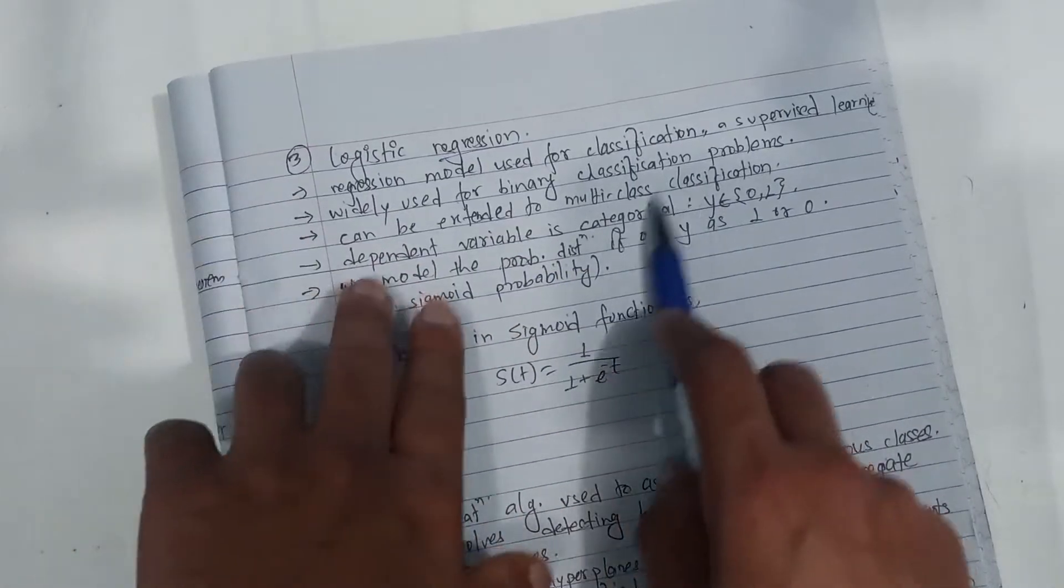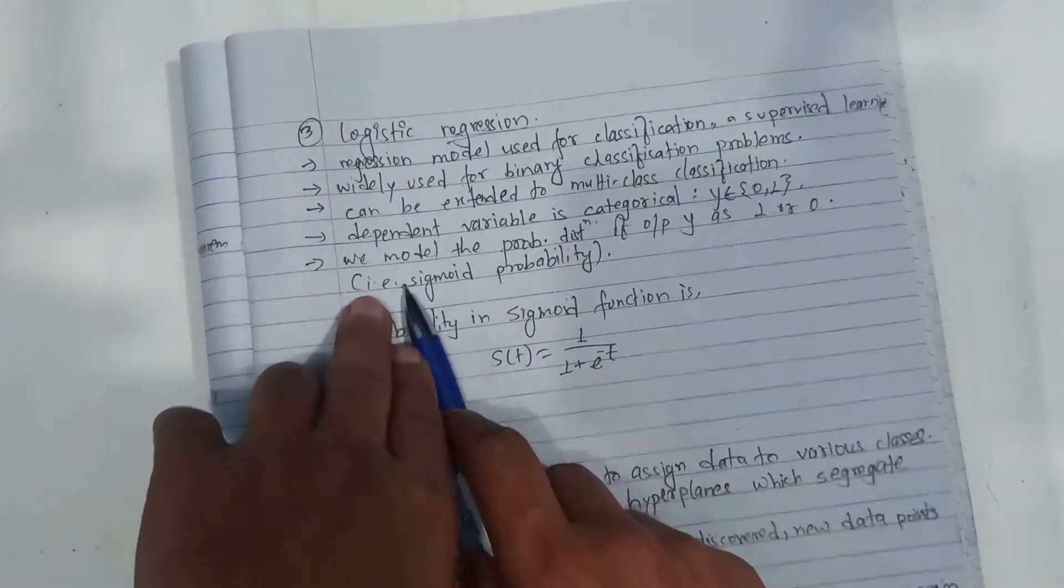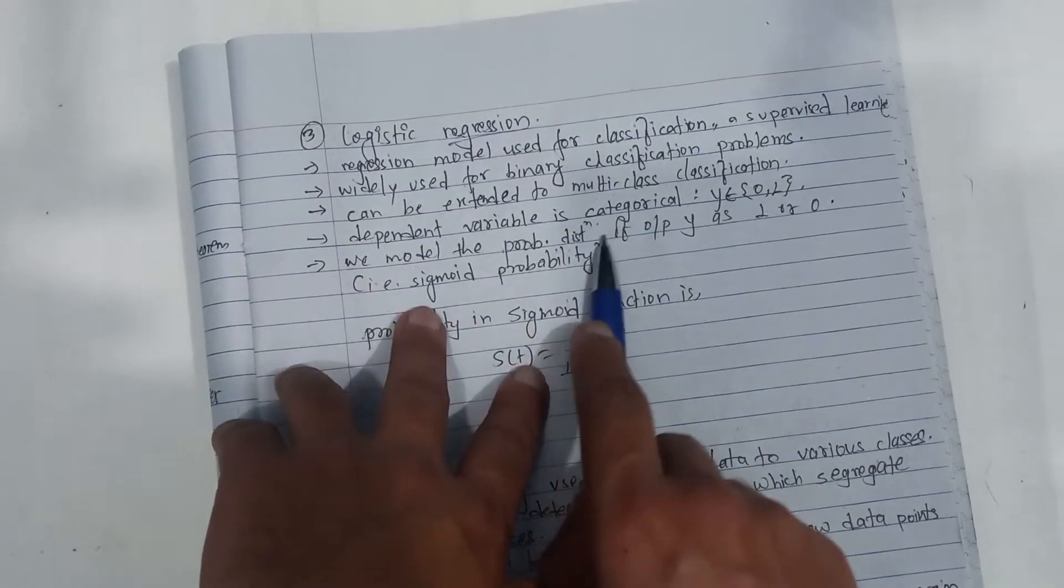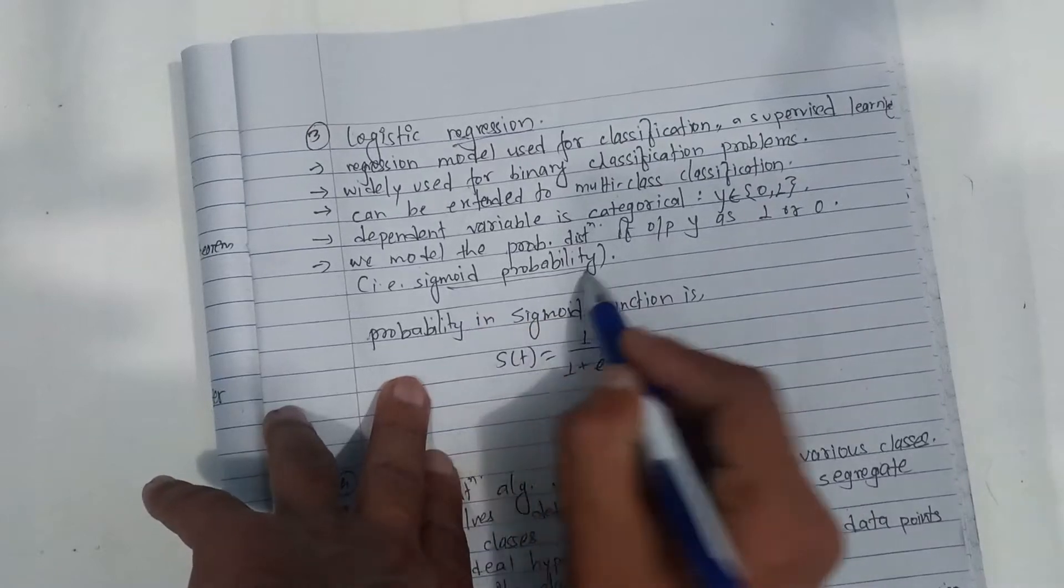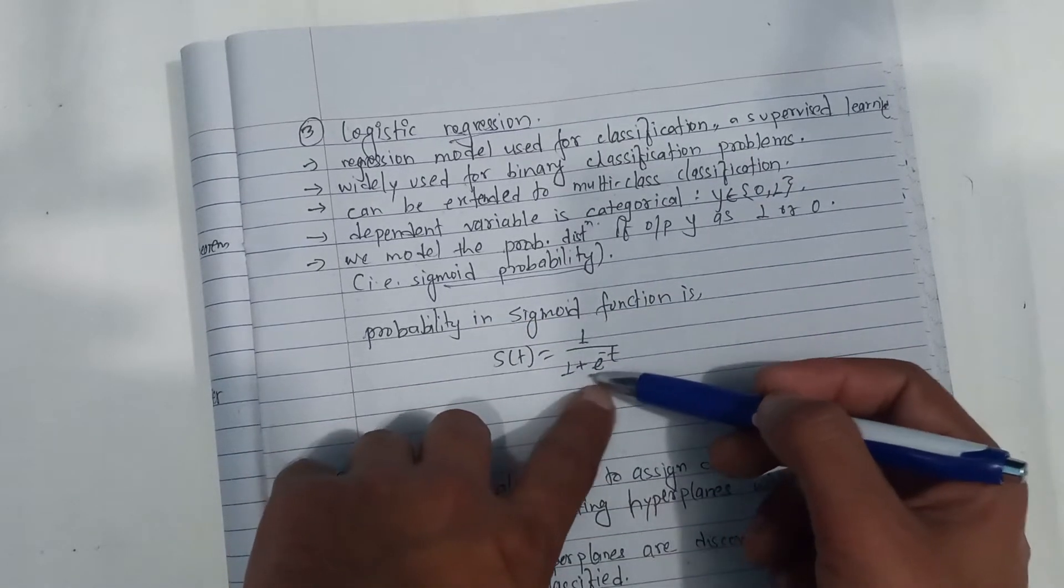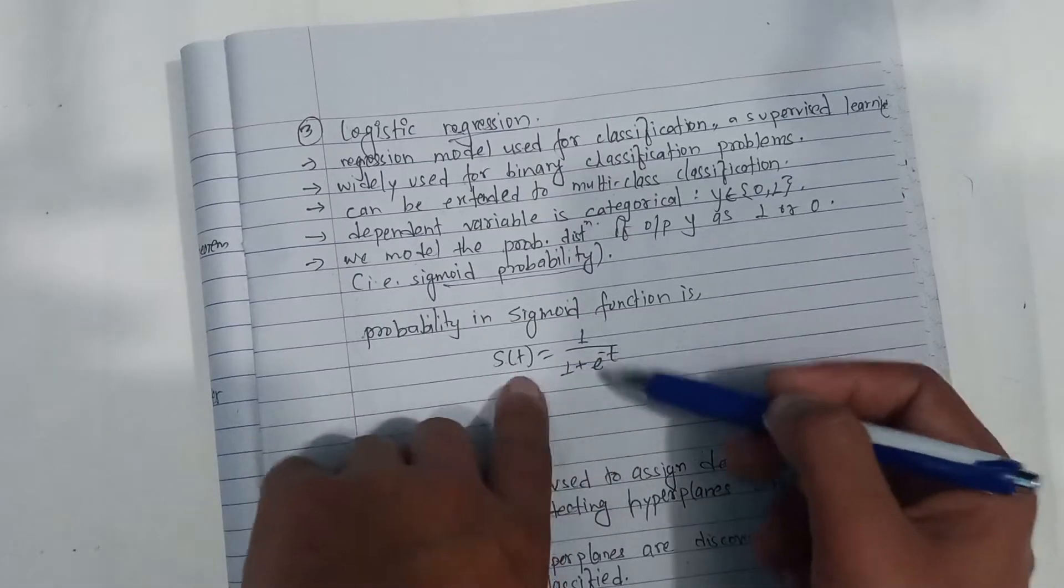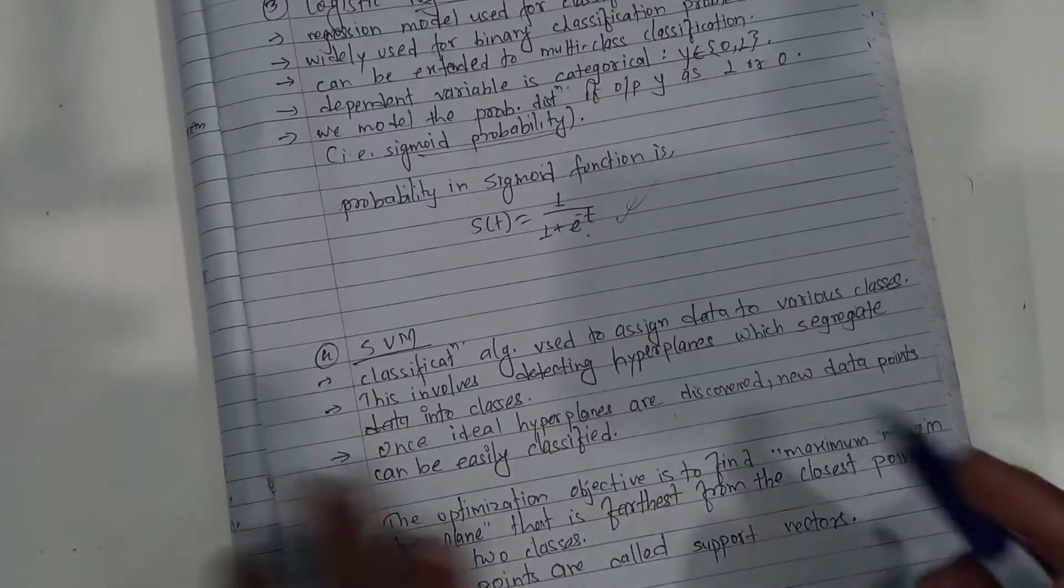How do you use it? The dependent variable is categorical. We model the probability distribution of output y is 1 or 0. That is the sigmoid probability function. The sigmoid probability function is 1 by 1 plus e to the minus z. This is the output, this is the probability distribution function.